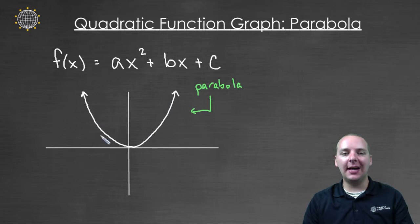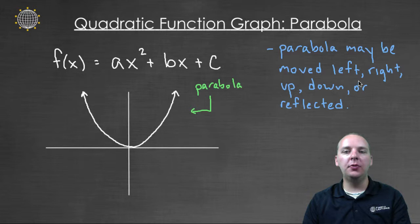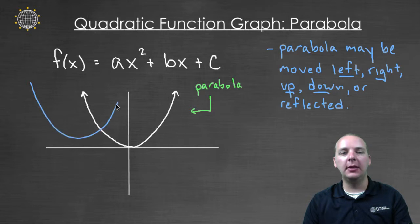Now it doesn't exactly have to look exactly like this u-shaped graph. It could be moved left, right, up, or down, we call those translations, so you might have maybe this is your graph, or maybe this is your graph, or something like that.